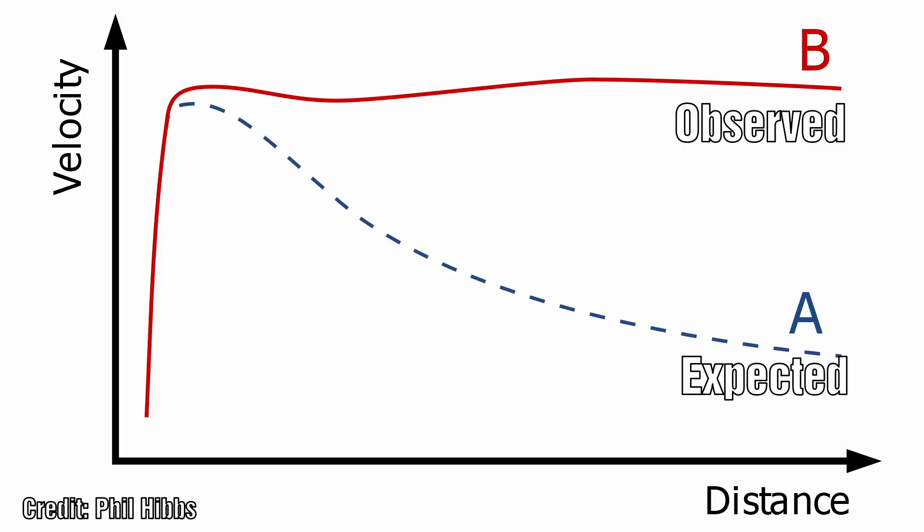At the center of the galaxy we do indeed see a good correlation to the inverse square law. But as we move a little further out this changes, meaning the orbital velocities stay constant as we move further out.